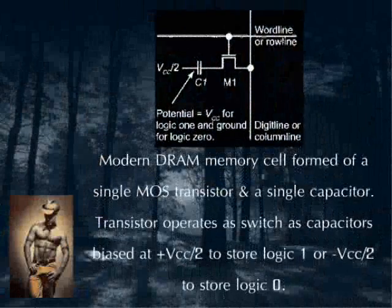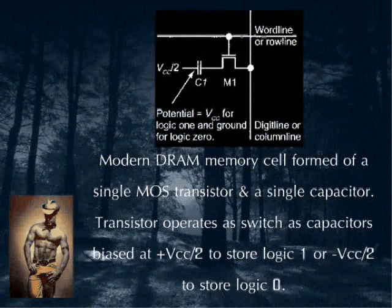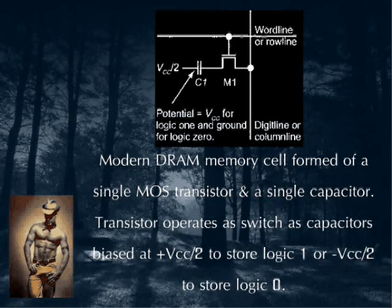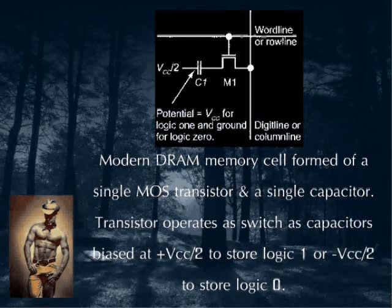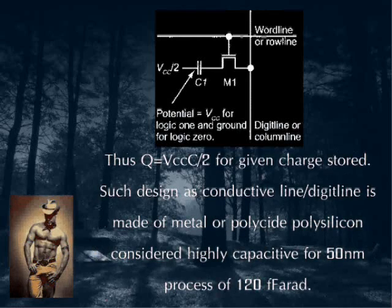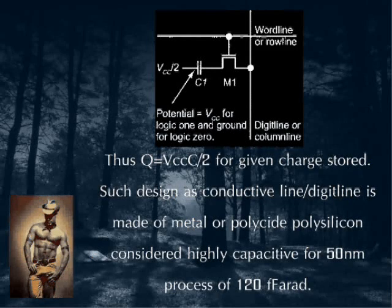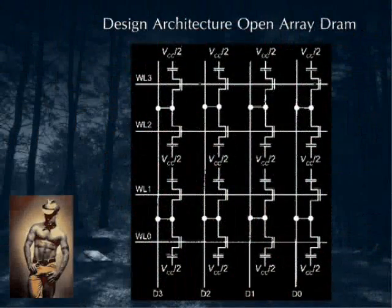Modern DRAM memory cells are formed of a single MOS transistor and a single capacitor. The transistor operates as a switch, with the capacitor biased at VCC/2 to store logic 1, or negative VCC/2 to store logic 0. Thus Q equals VCC times C over 2 for a given stored charge. The conductive digit line, or bit line, is made of metal or polysilicon and is highly capacitive — 120 fF for a 50 nm process.